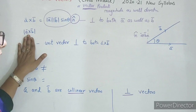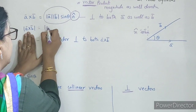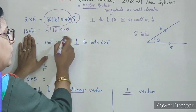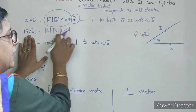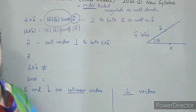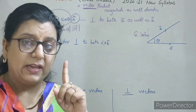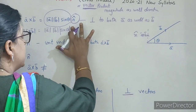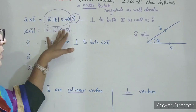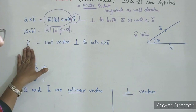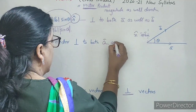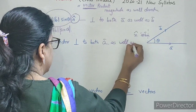This is the direction of A cross B, that is n̂. Ab hum nikalenge iska magnitude. Magnitude matlab: A magnitude, B magnitude, sin theta. Agar yeh negative hai, toh positive ho jayega. And magnitude of unit vector n̂ — we know magnitude of unit vector is one, so yeh likhne ki zaroorat nahi hai. Iska matlab A cross B ka magnitude kya hoga? Mod A, mod B, sin theta. What is n̂? Unit vector perpendicular to both A as well as B.